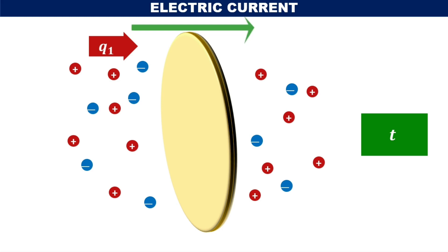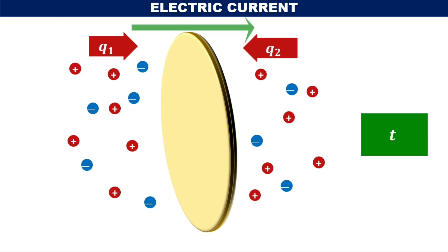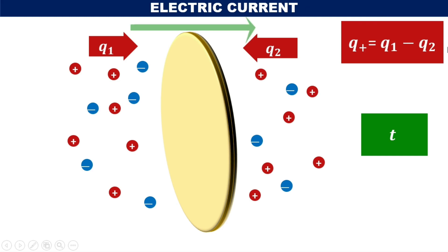The amount of positive charges crossing the given area in the reference direction in a time interval of T seconds is represented as Q1. The amount crossing in the opposite direction is Q2. The net flow of positive charges across the given area along the reference direction in a time interval of T seconds is represented as Q1 minus Q2, which is represented as Q+.